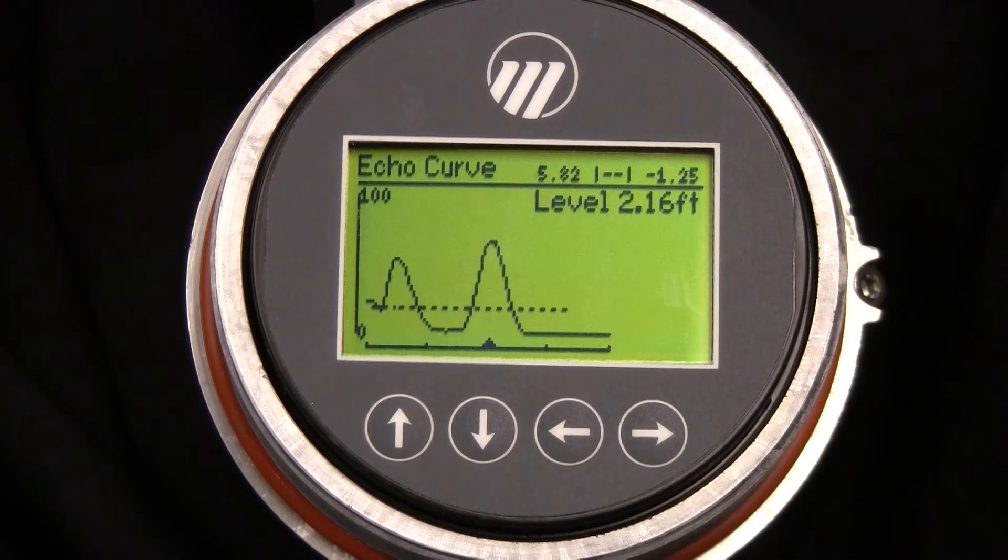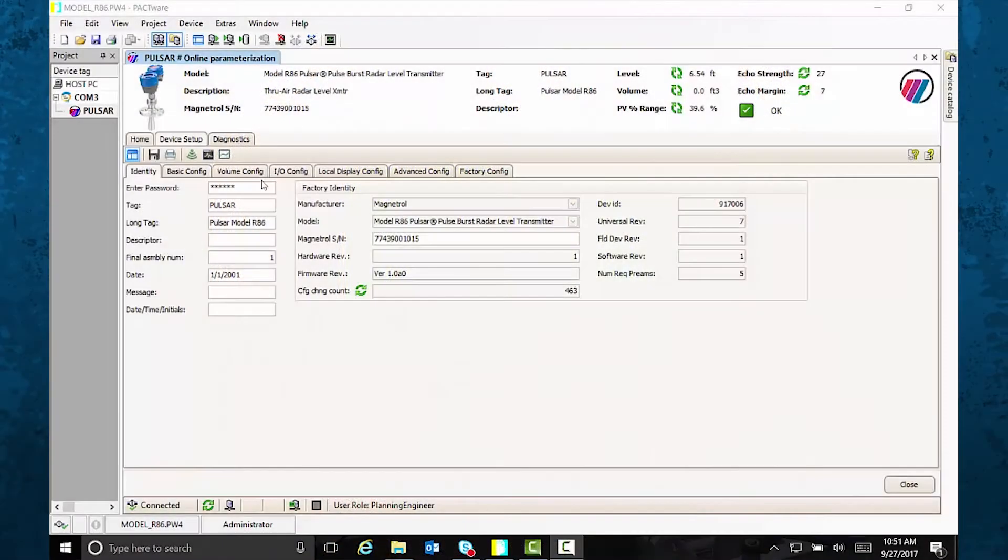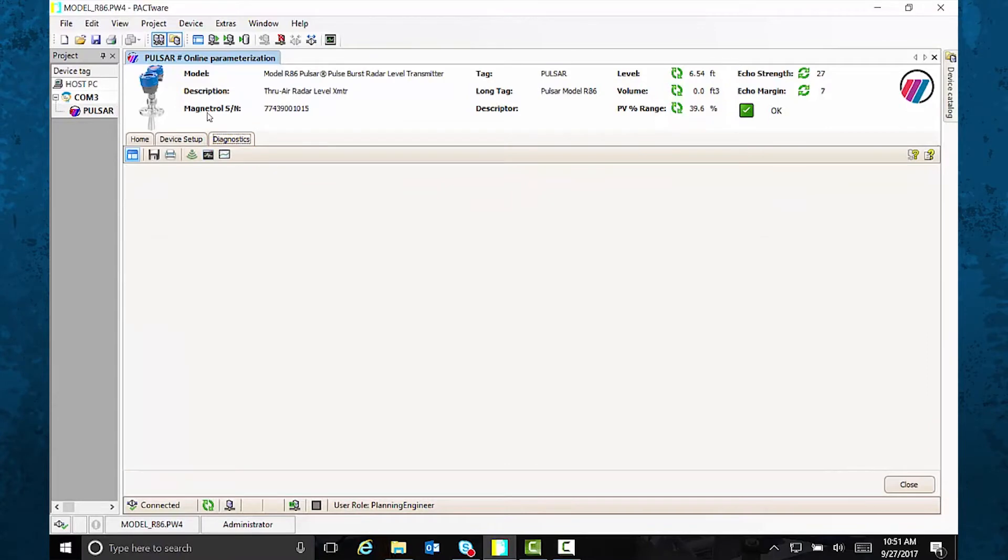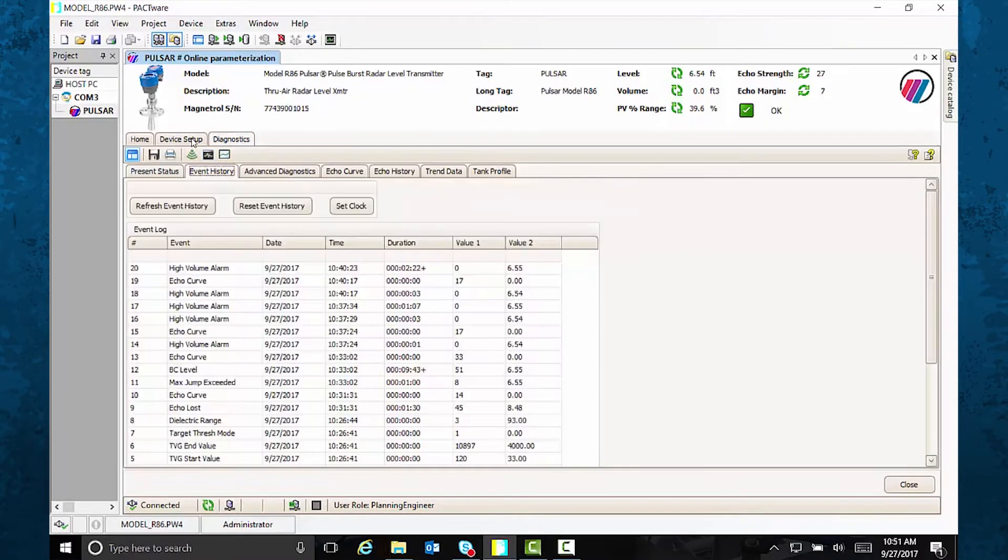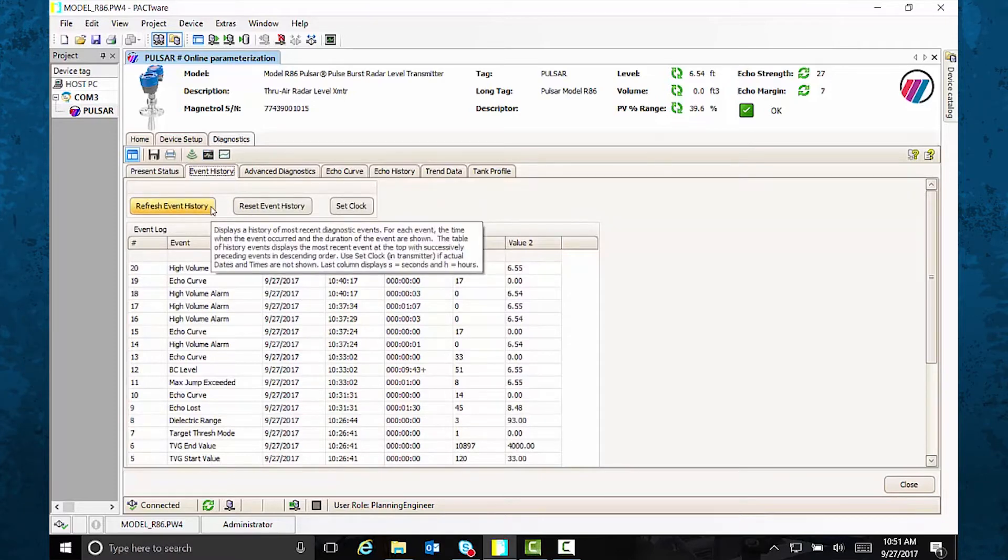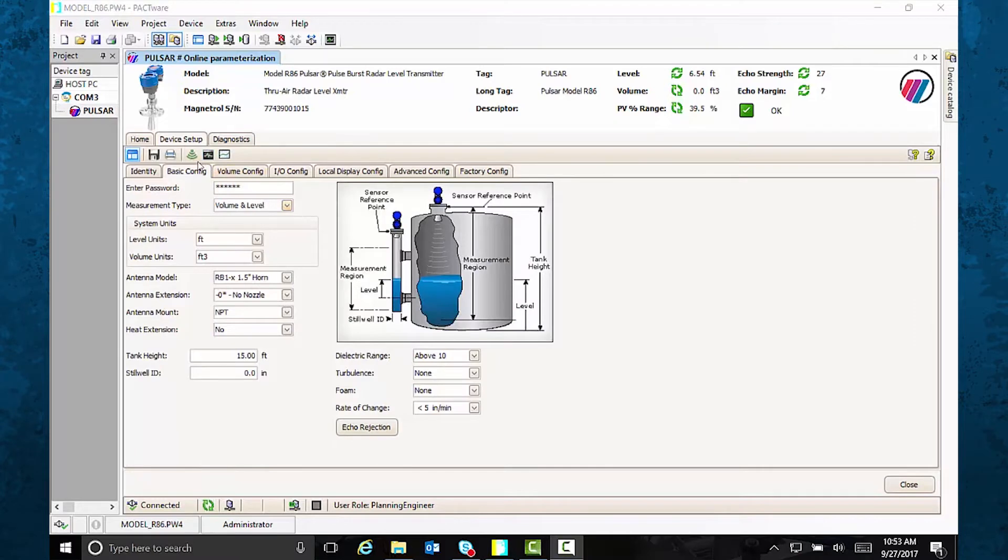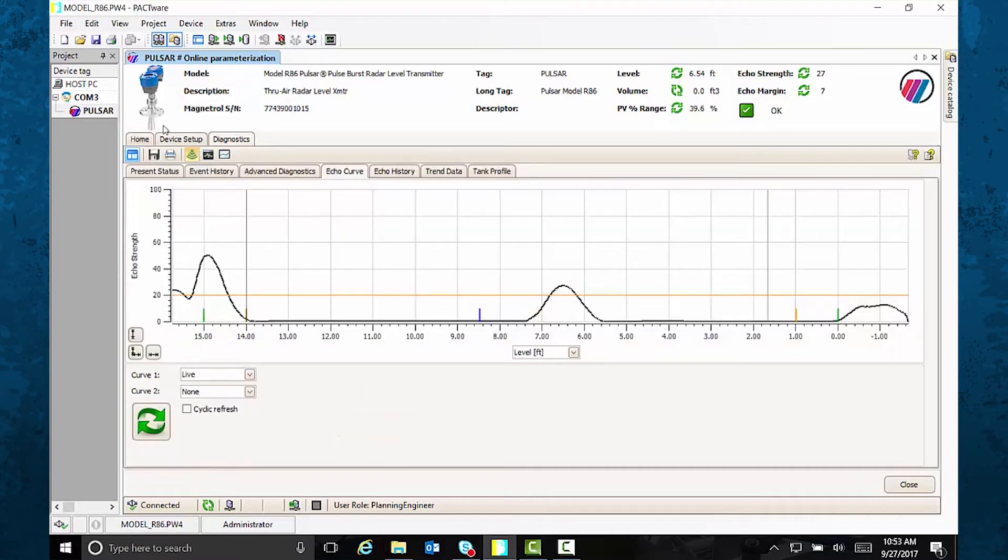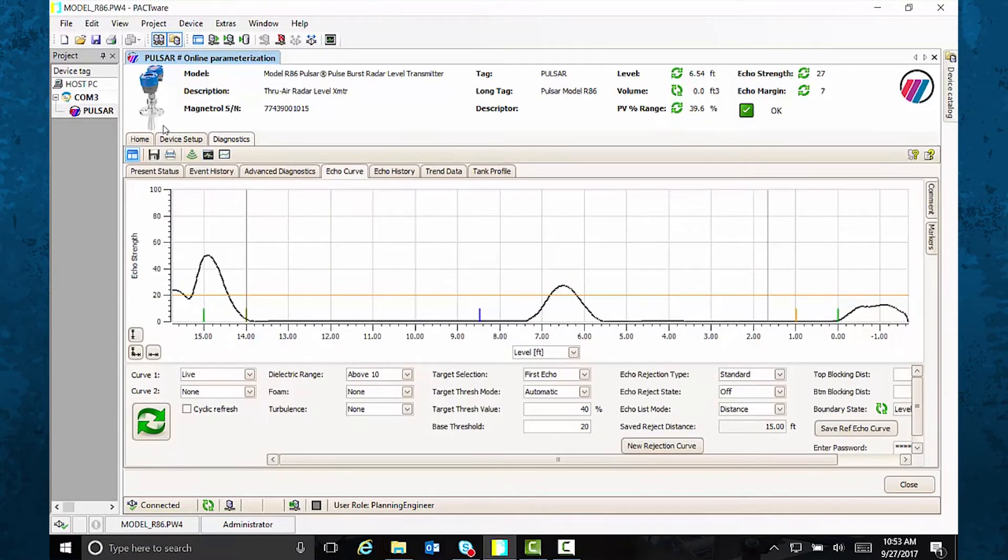And look, the expanded event history shows when and why the echo curve was triggered. In fact, you can view up to 20 configuration and diagnostic events in chronological order. That gives you more in-depth troubleshooting insights than ever before.